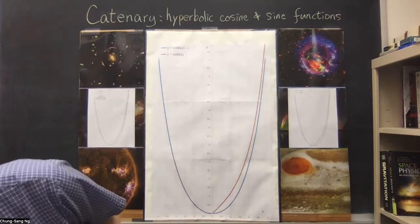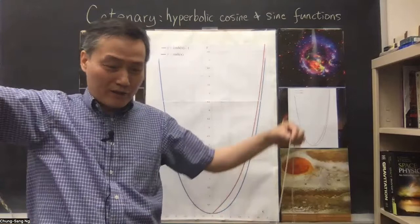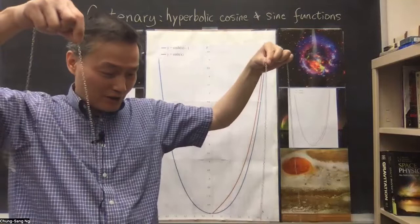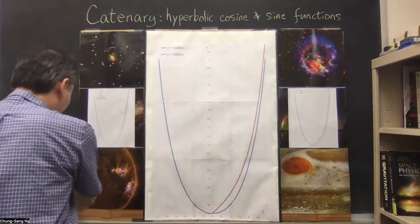Now you want to find a chain — it's better to use a chain, and I'll explain why in a bit. You find a chain, hang it out, and you can test whether the shape of the chain is given by this hyperbolic cosine function. It's best to print it out so that you don't need to hold it up with your hands.